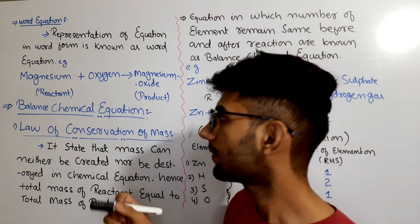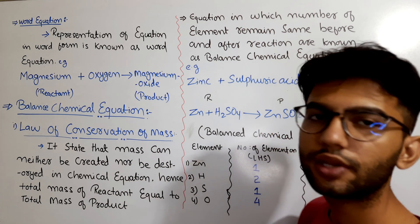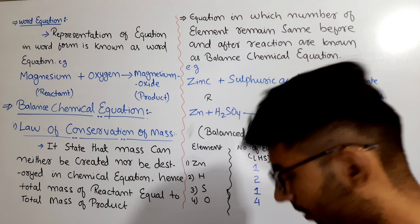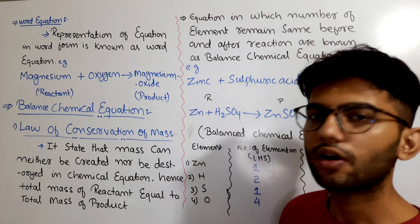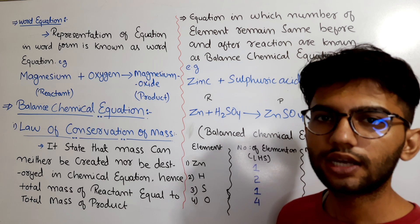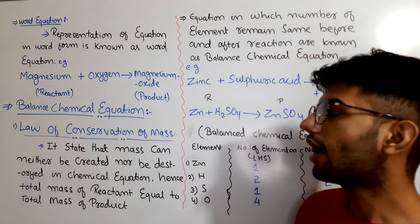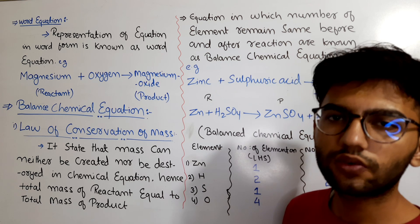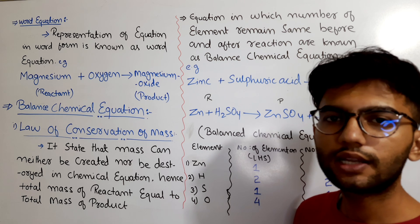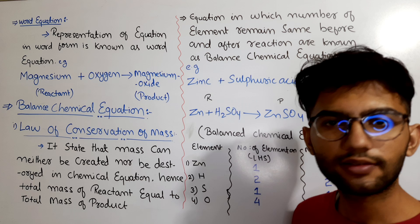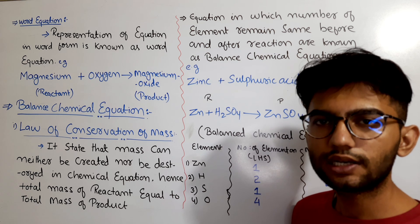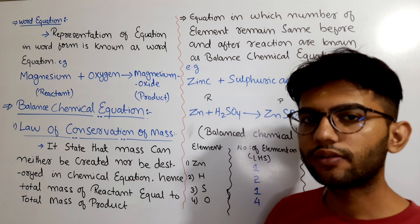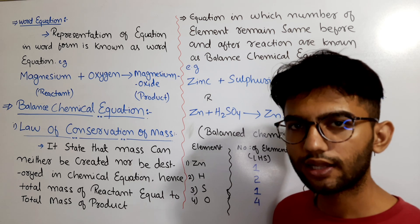Now, what is a balanced chemical equation? Before understanding it, we need to understand the law of conservation of mass. This law states that mass can neither be created nor destroyed — it just changes from one form to another. Applying this to chemical reactions: mass of the reactants must always equal the mass of the products, so what we take on the left hand side must equal what we get on the right hand side.